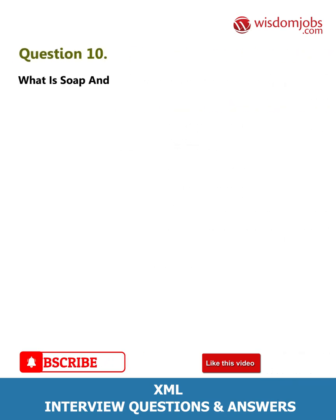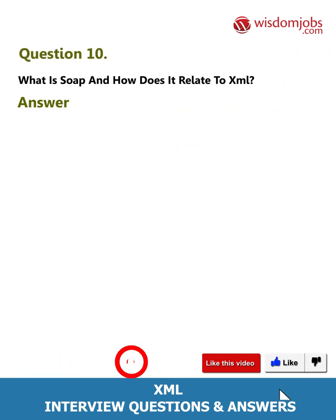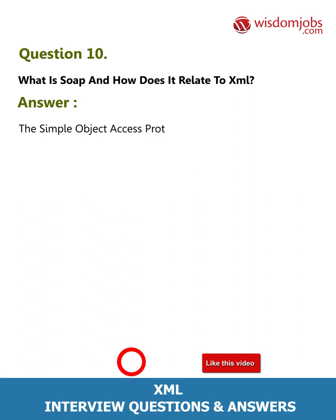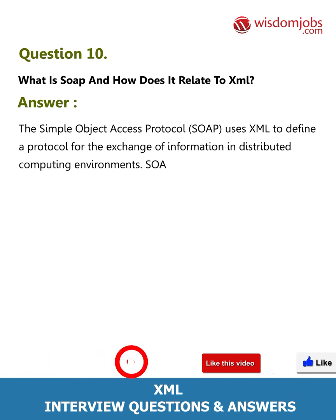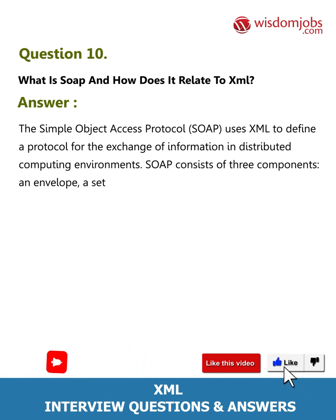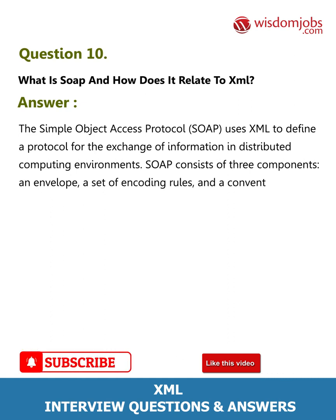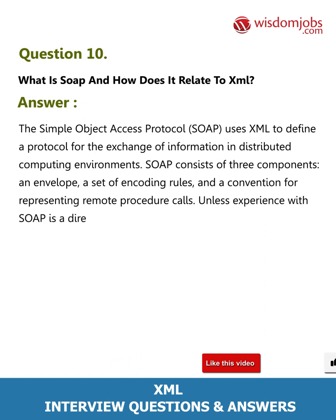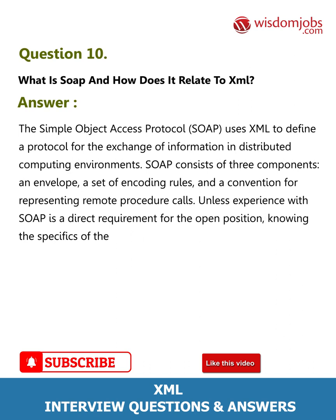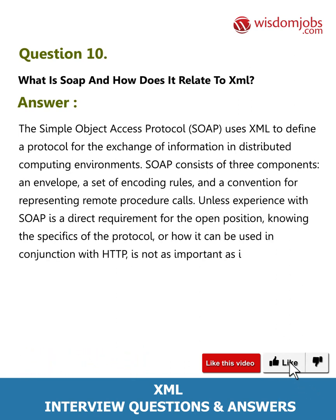Question 10: What is SOAP and how does it relate to XML? Answer: The Simple Object Access Protocol uses XML to define a protocol for the exchange of information in distributed computing environments. SOAP consists of three components: an envelope, a set of encoding rules, and a convention for representing remote procedure calls. Unless experience with SOAP is a direct requirement for the open position, knowing the specifics of the protocol or how it can be used in conjunction with HTTP is not as important as identifying it as a natural application of XML.